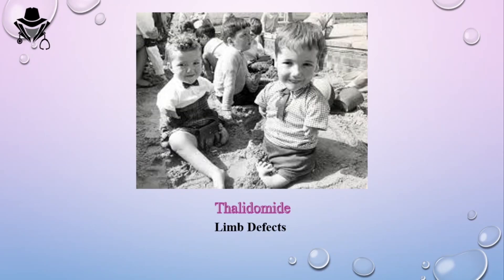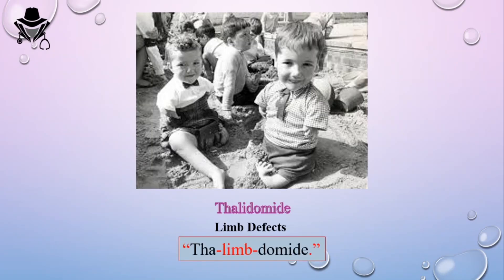The first agent is thalidomide. Back in the 1960s there was no strict control on medications used by pregnant women, so thousands of pregnant women used thalidomide to treat morning sickness. What they found was that many of their babies had limb defects, as you can see in the picture. So the mnemonic is 'LIMBdomide' — thalidomide causes limb defects.